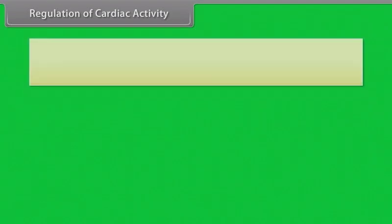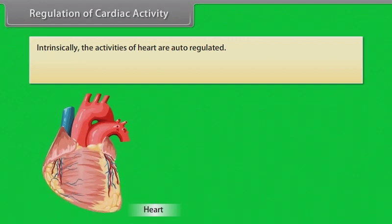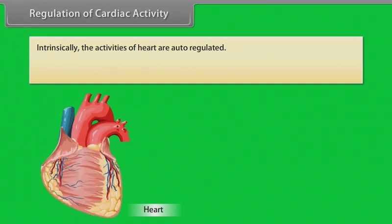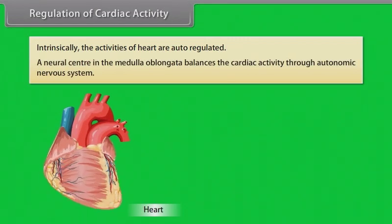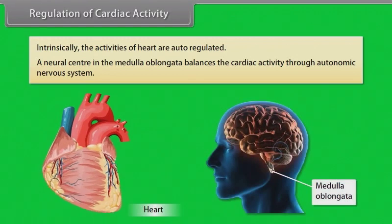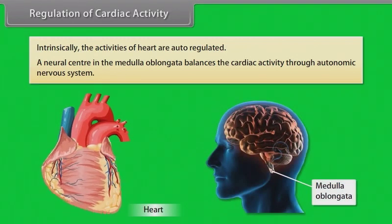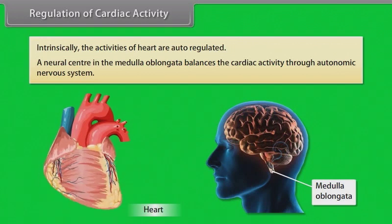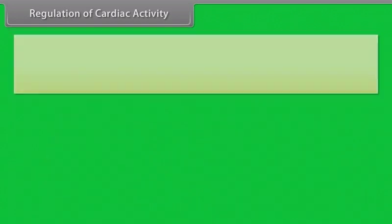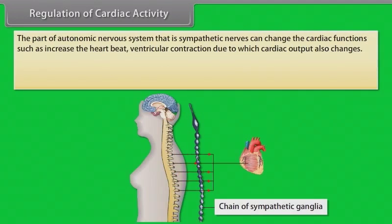Regulation of cardiac activity: Intrinsically, the activities of the heart are auto-regulated. A neural center in the medulla oblongata balances cardiac activity through the autonomic nervous system. The sympathetic nerves of the autonomic nervous system can change the cardiac functions.